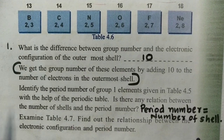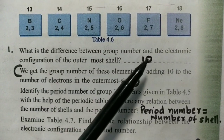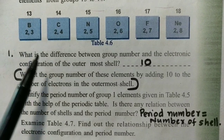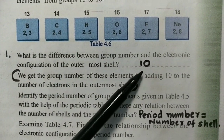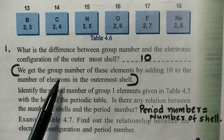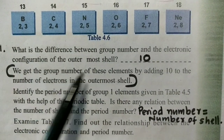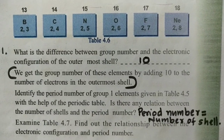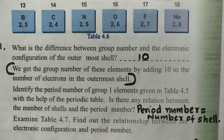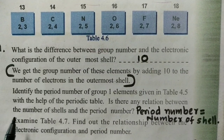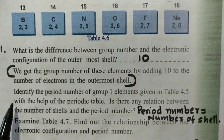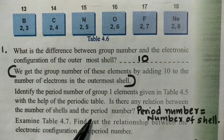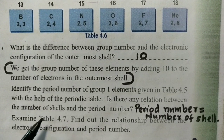What is the difference between group number and electronic configuration? We get the group number of elements by adding 10 to the electrons in the outermost shell. The period number and shell number are related — you will find this in the yellow table.